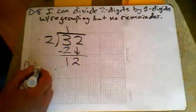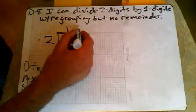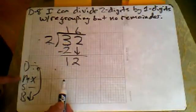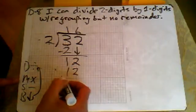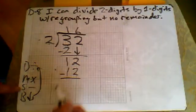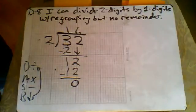So repeat those steps. Two goes into 12 or 12 divided by two is six and then our multiplication step. Six times two is 12 and subtract zero. Nothing to bring down so the answer is 16.